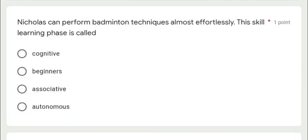Next question: Nicholas can perform badminton technique almost effortlessly. This skill learning phase is called: is it cognitive, beginners, associative, or autonomous? Good, the answer is autonomous.